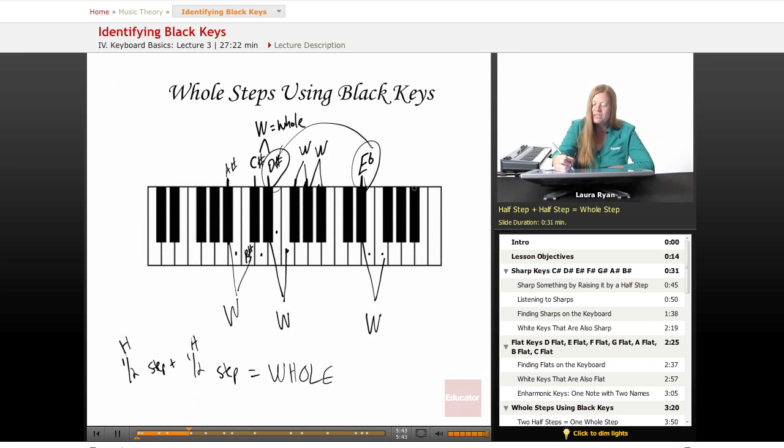So, let's take the same thing over here. B natural, here's a B flat. So B flat to B natural is one half step. B natural to C is another half step. So, we have B flat to C is a whole step.